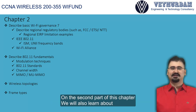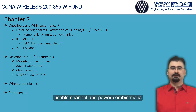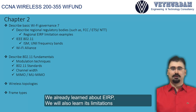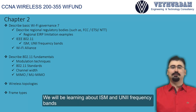On the second part of this chapter, we will also learn about usable channel and power combinations. We already learned about EIRP and we will also learn about its limitations. We will be learning about ISM and UNII frequency bands.